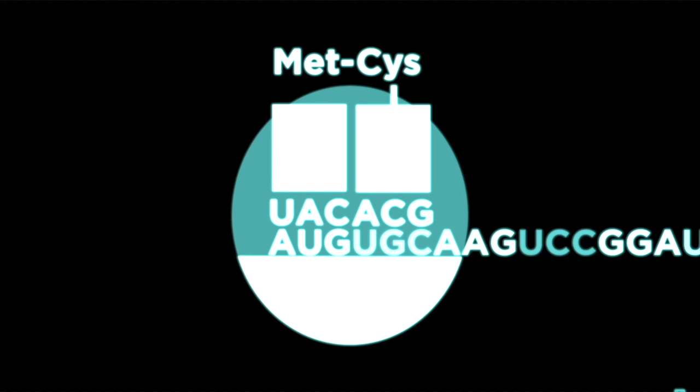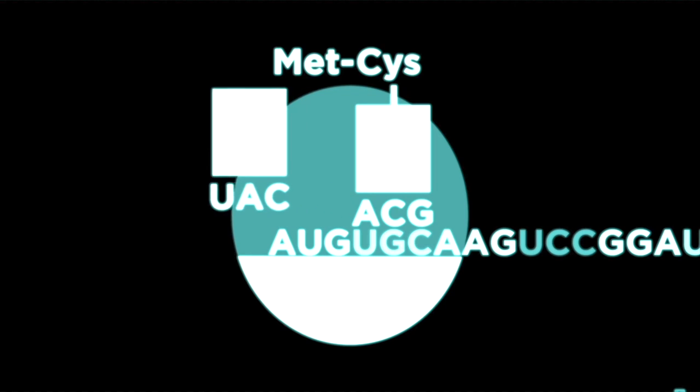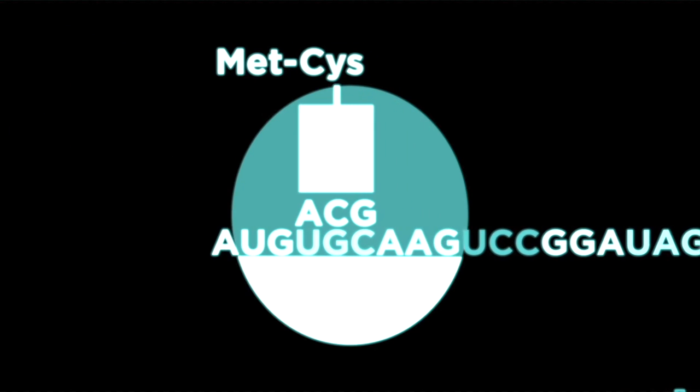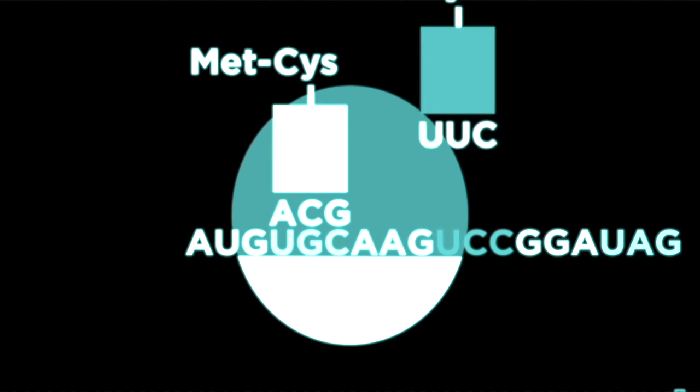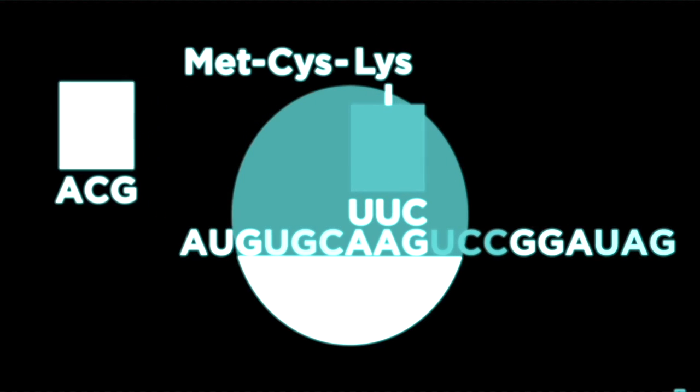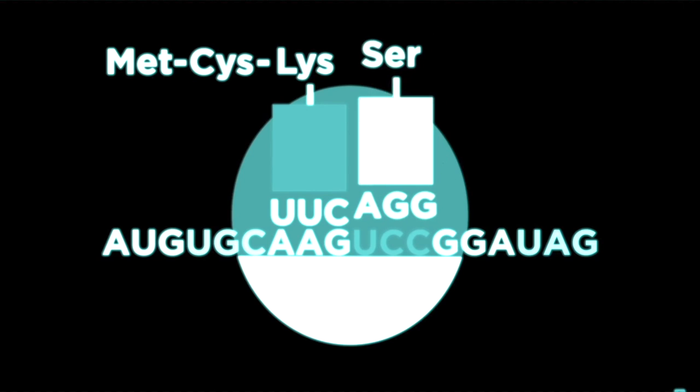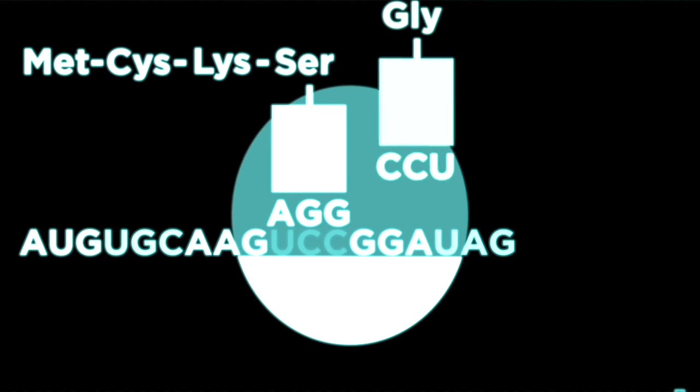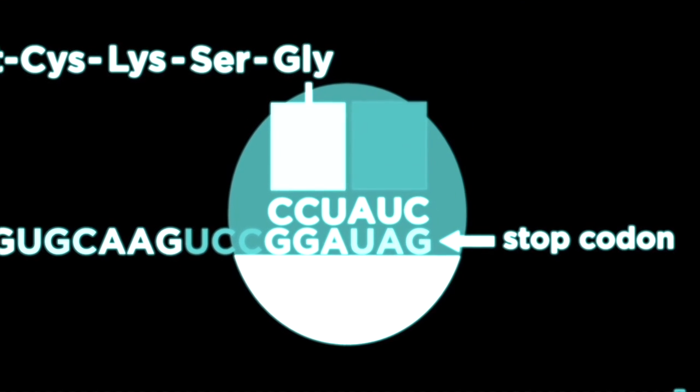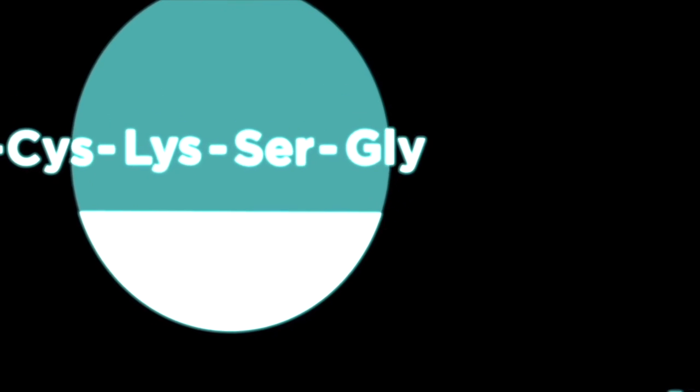During elongation, the next charged tRNA with the corresponding anticodons enters with another amino acid. The amino acid will then form a peptide bond and the whole mRNA will slide down one codon. This process will continue to repeat till the end codon is reached. And by then, the polypeptide will leave the ribosomal complex and form a protein.